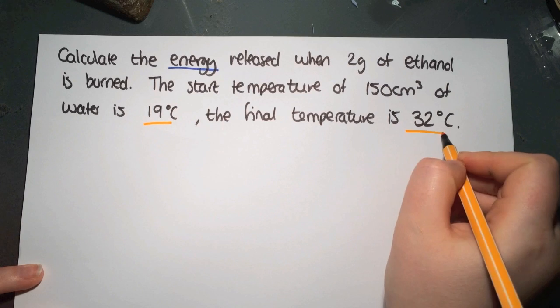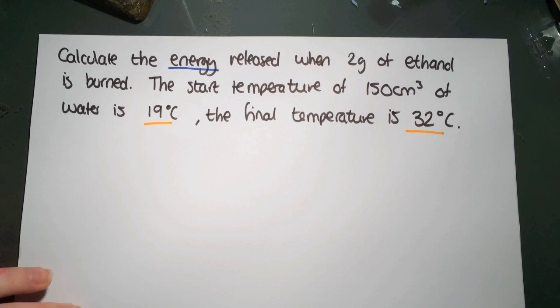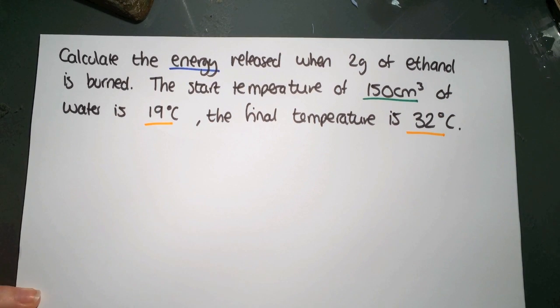We have the start temperature of 150 centimeters cubed of water is 19 degrees. And the final temperature is 32. So we're going to have to do a sum to work out our delta T. And then again, we've been given a volume of water. This is very common. We'll have to change this into kilograms.